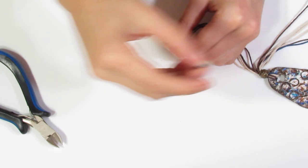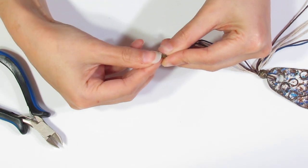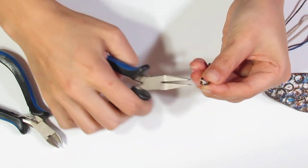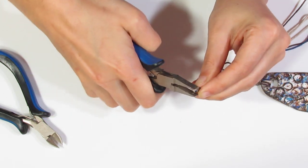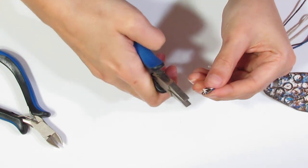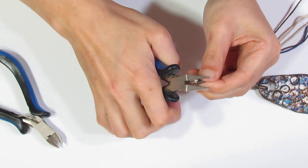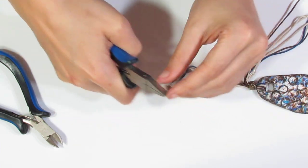And bring this cord end over. Pop all those cords in. And then of course flatten that cord end, trapping in all of the cords. Like so. Give it a quick yank to make sure they're all trapped in there.